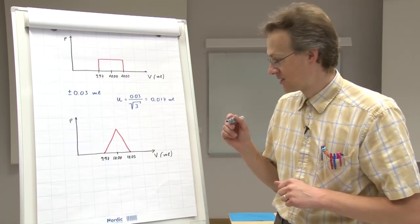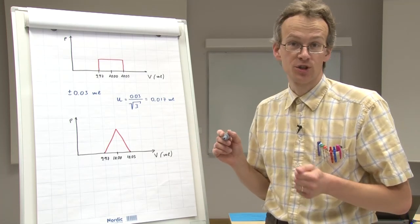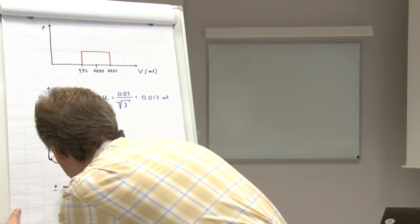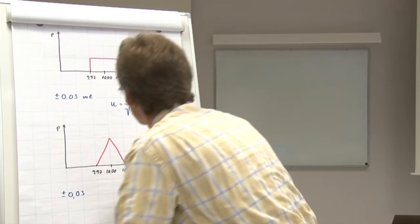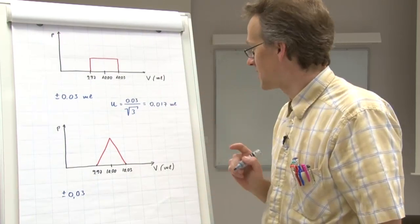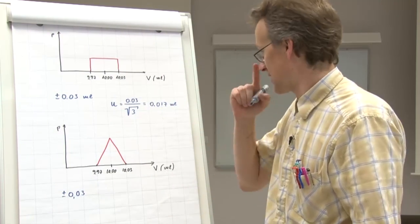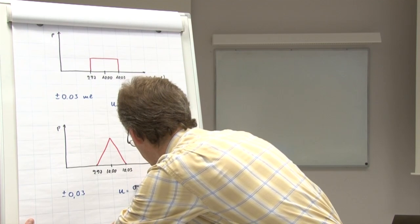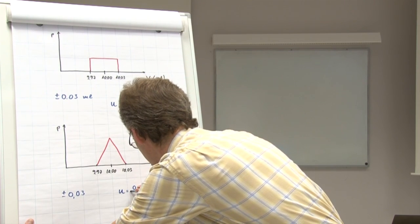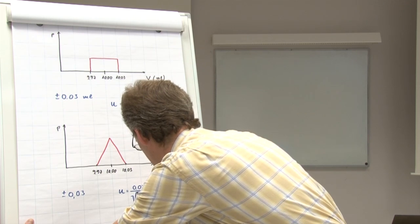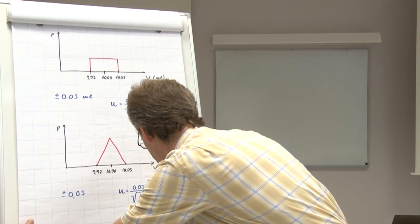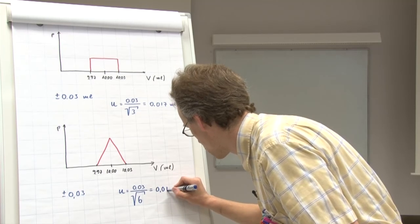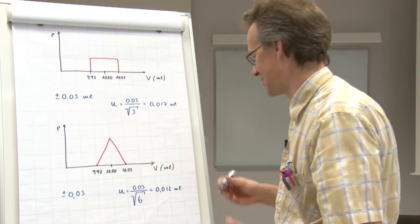So if we have uncertainty estimate given as plus minus 0.03, then the standard uncertainty estimate of this would be 0.03 divided by square root of 6, which is equal to roughly 0.012 milliliters.